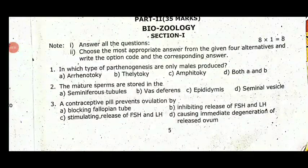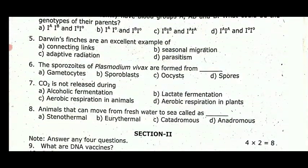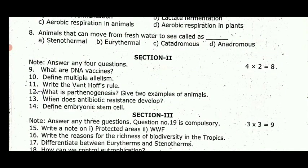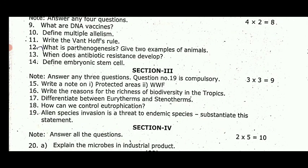From biozoology: what is a DNA vaccine; define multiple allelism; write the one-gene one-enzyme hypothesis rules; what is parthenogenesis — give two examples of animals; when does antibiotic resistance develop; define embryonic stem cell. Three-mark compulsory question covers: alien species, invasive species, threats to endemic species; how to control eutrophication; difference between eurytherms and stenotherms; reasons for richness of biodiversity in tropics; write a note on protected areas and WWF.